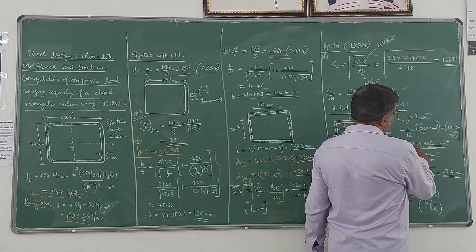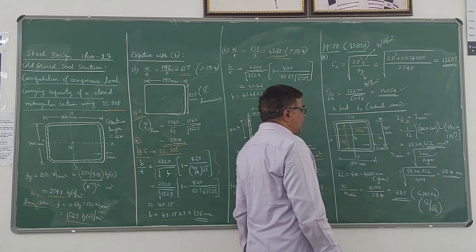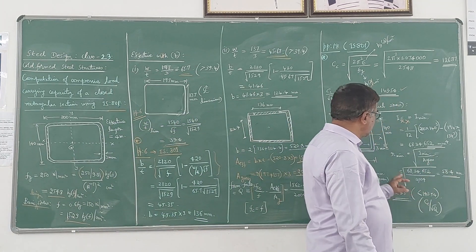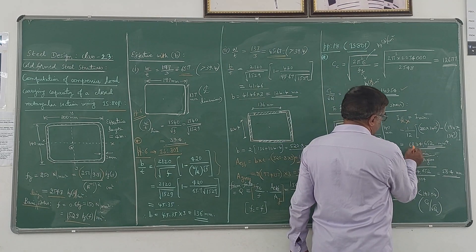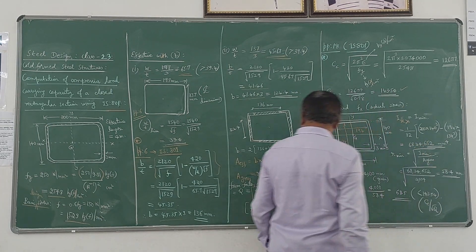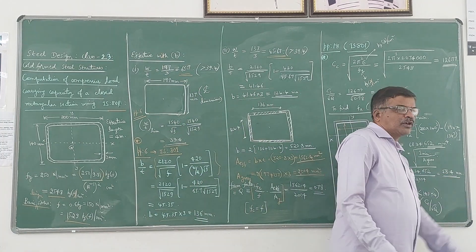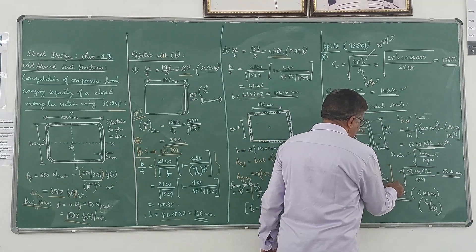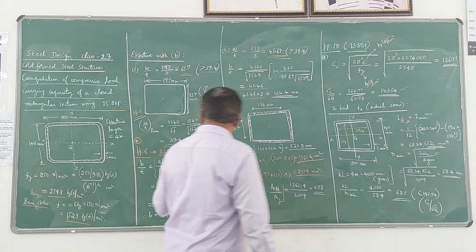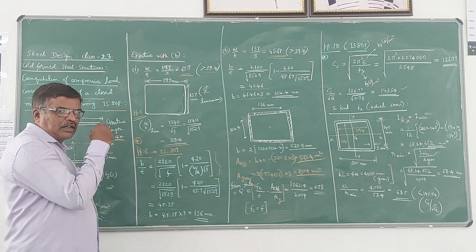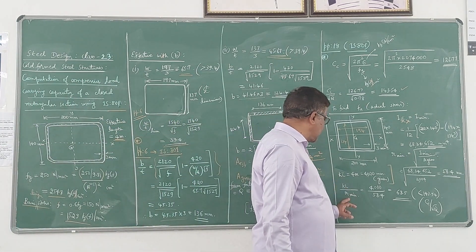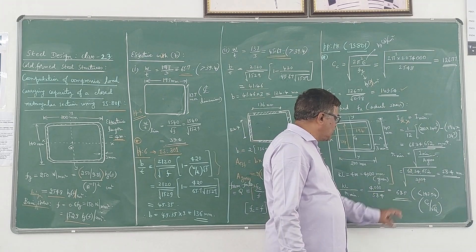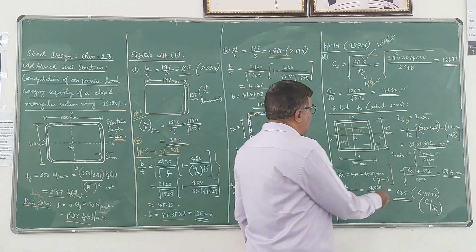The minimum radius of gyration r_min = √(I_min / A_gross) = √(6,834,652 / 2004) = 58.4mm. The effective length is given as 4 meters. Therefore KL/r_min = 4000mm / 58.4mm = 68.5.